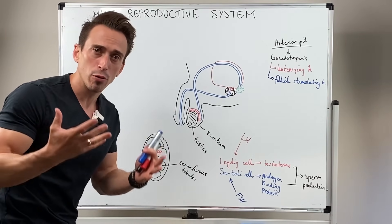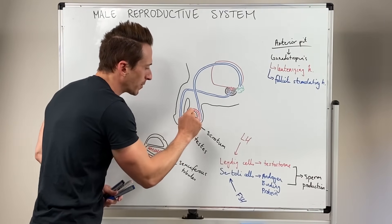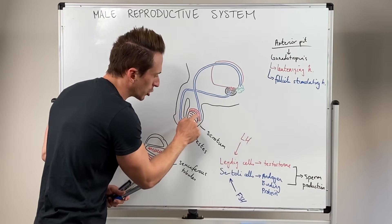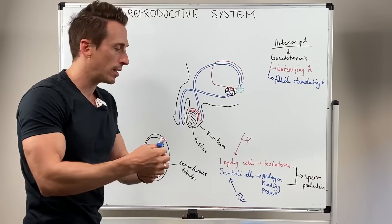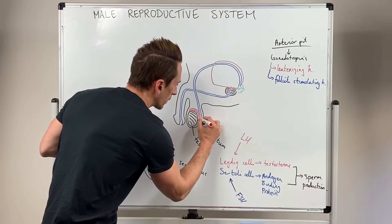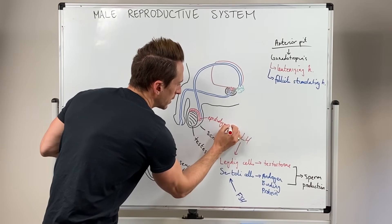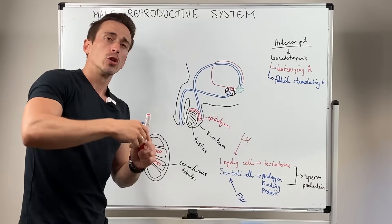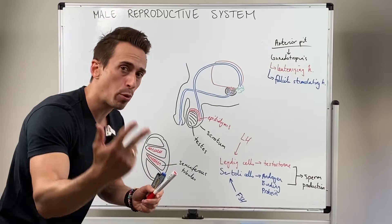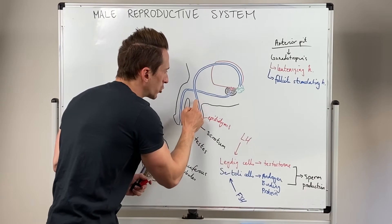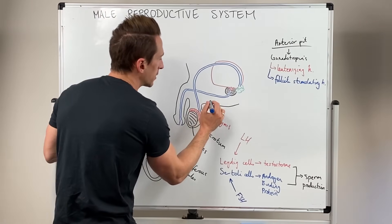Sperm is starting to be produced at puberty. The sperm that's produced is transported into a structure that lines the outside of the testes called the epididymis. The role of the epididymis is to store sperm, mature sperm, and then transport sperm into the next tube, which is called the vas deferens, also known as the ductus deferens.